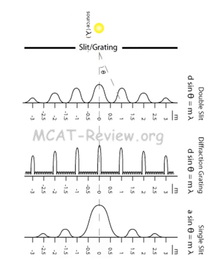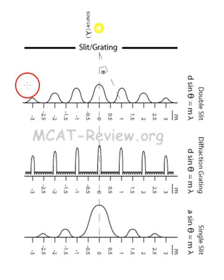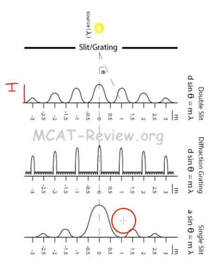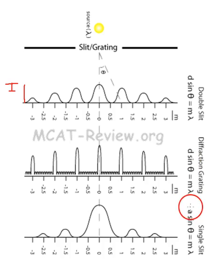Let's review the graphs of what these look like. These represent intensity graphs — the brightness is on the vertical axis, so the greater the peak, the brighter it's going to be. This is our double slit, this is our grating, and this is our single slit. All three have the same distance between the slits, and this would be the width of the slit, just so you can see a nice comparison.